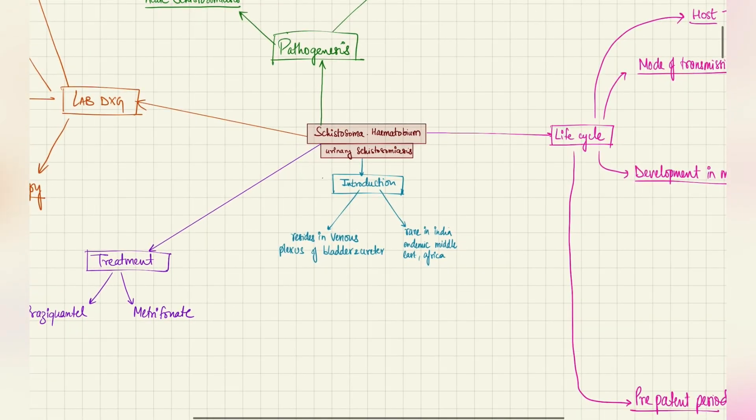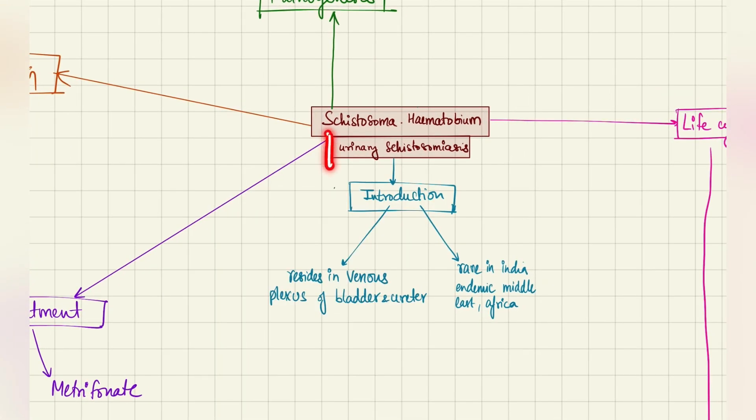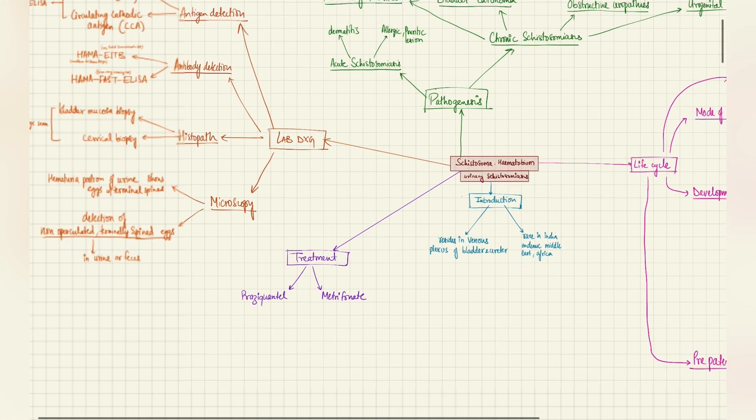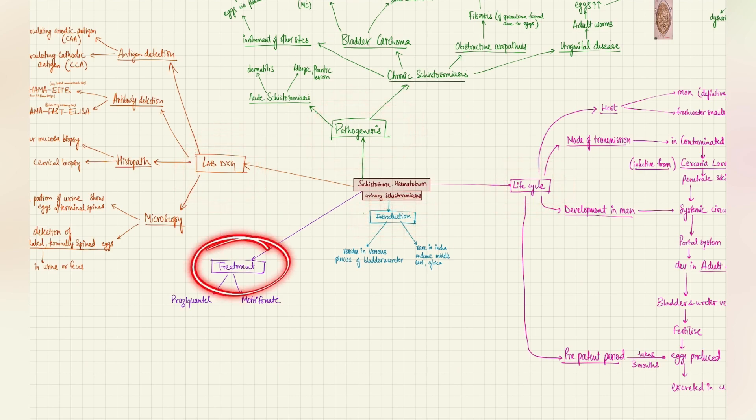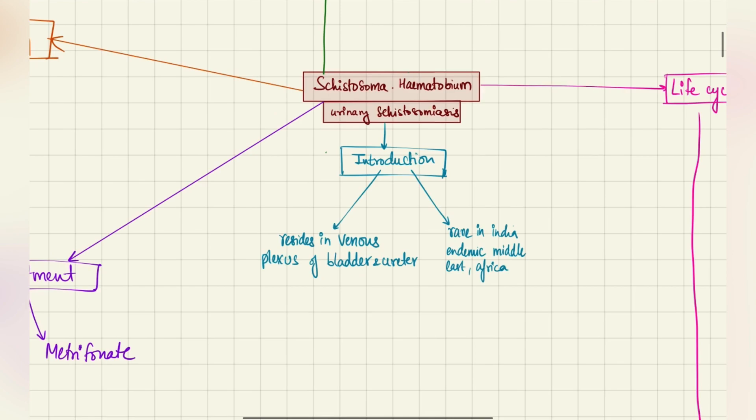All the information in this video is taken exclusively from the Apoorva Shastri textbook for microbiology, so you can follow along. Let's get started. First of all, Schistosoma haematobium is the causative agent of urinary schistosomiasis. We'll be talking about this parasite in four typical headings: introduction, life cycle, pathogenesis, and lab diagnosis. We'll also talk about the treatment briefly.